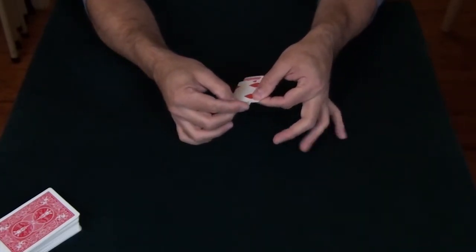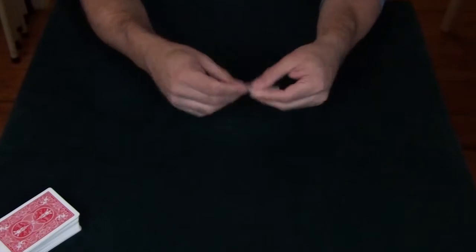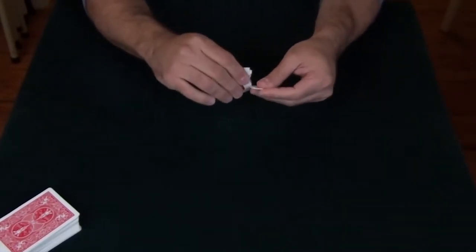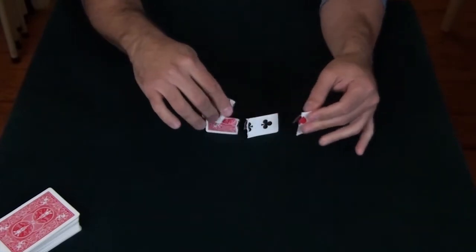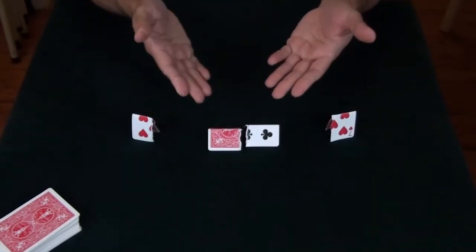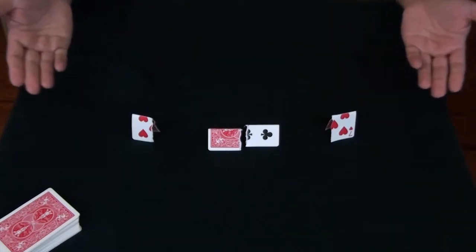But see, time travel has not been perfected and occasionally the machine does break down. What happens is the time traveler gets stuck halfway in the future and halfway in the past, which makes time travel very difficult. And this was Card Warp.